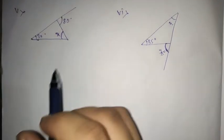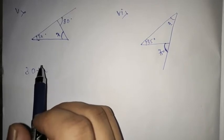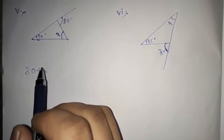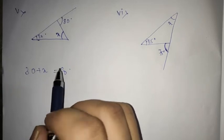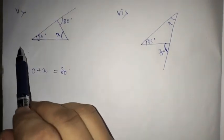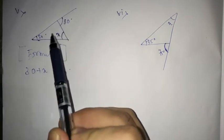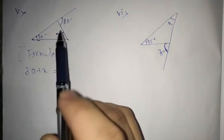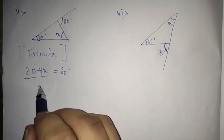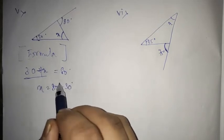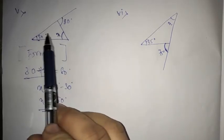Proceeding next to question number five. Here we have 30 plus x. Students, remember, you have to write the formula — what formula we are using here is very important to write. Without writing the formula, do not directly mention the value. The formula I am using is: exterior angle of a triangle is equal to the sum of its interior opposite angles. So interior opposite angles are 30 and x, meaning 30 plus x is equal to 80. So x is equal to 80 minus 30, which is 50 degrees. Logically, 50 plus 30 is 80.